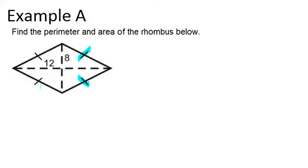Notice that all four sides are marked as being congruent, which is why this is a rhombus. What we're given are two portions of the diagonals. This is length 12, and this is length 8.